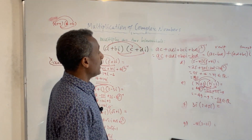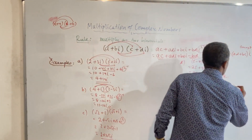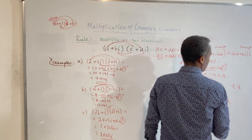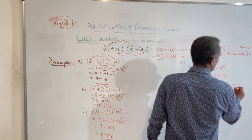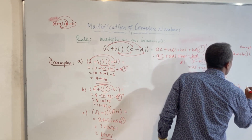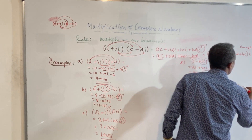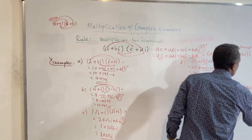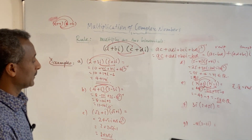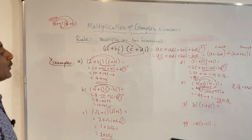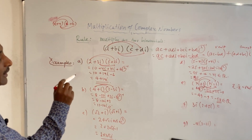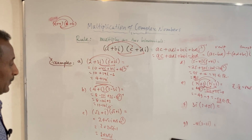When z times z-bar — a complex number times its conjugate — the result is a real number.